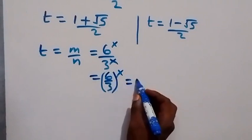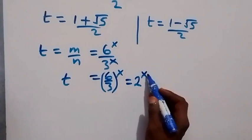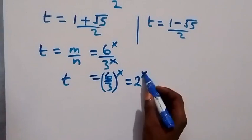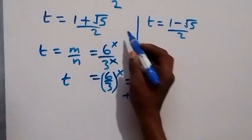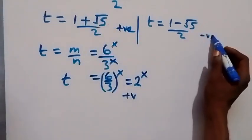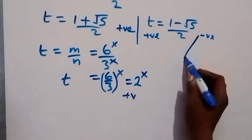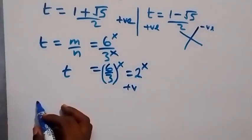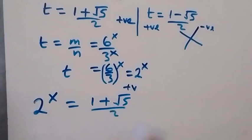6 divided by 3 is 2, so t equals 2 raised to power x. Since we stated from the beginning that x is a positive number, t must also be positive. The second solution (1 minus root 5)/2 is negative, so we reject it and work only with t equals (1 plus root 5) over 2.